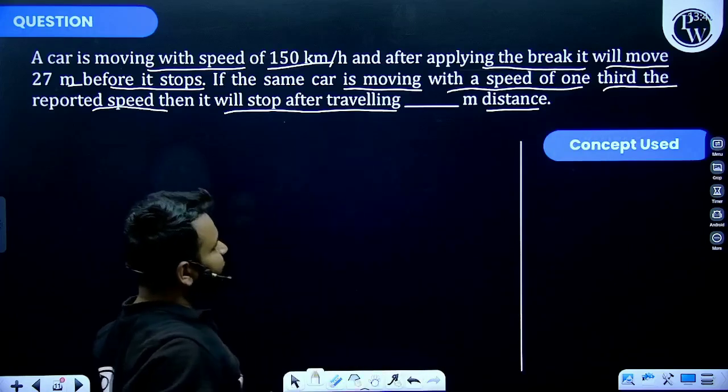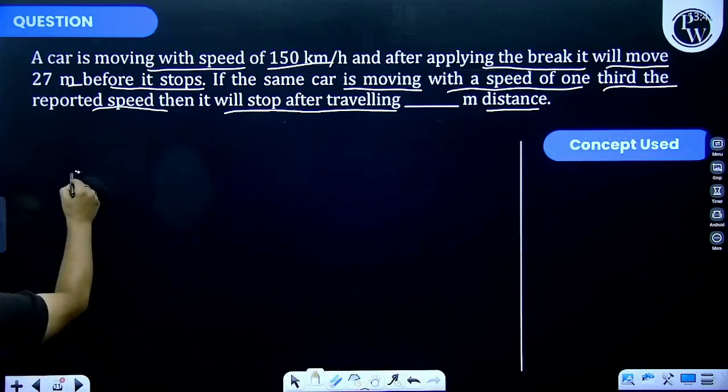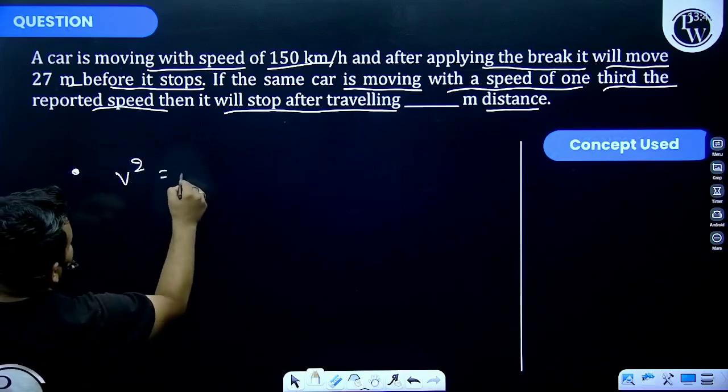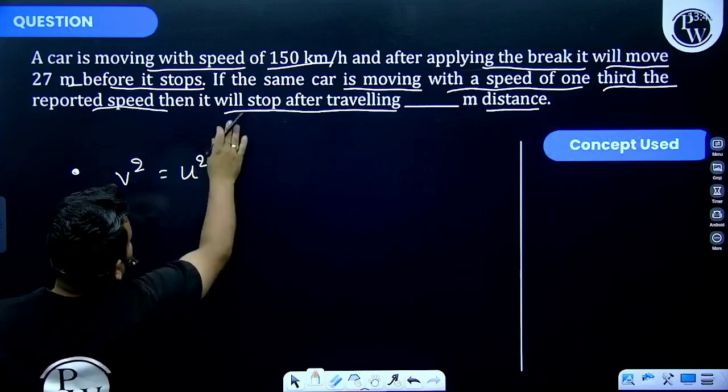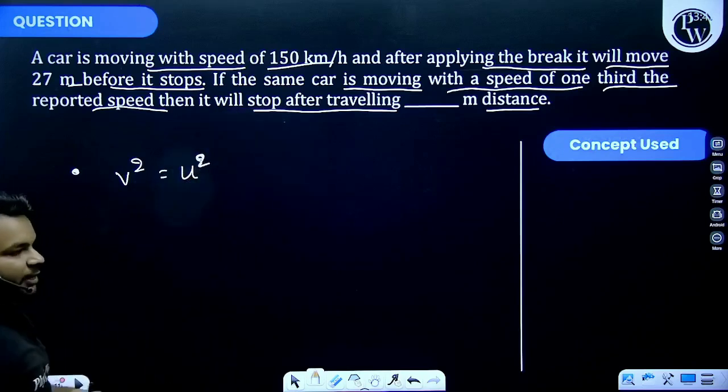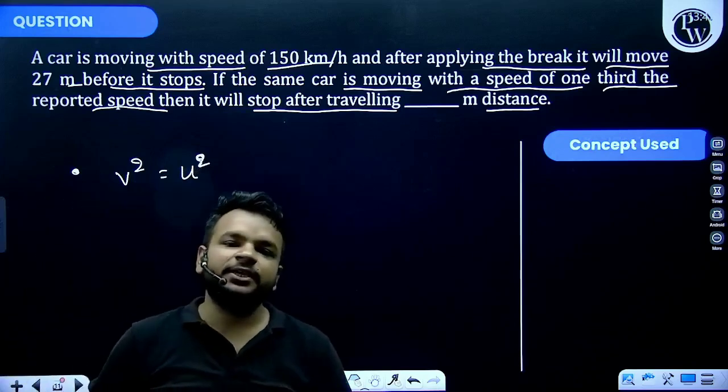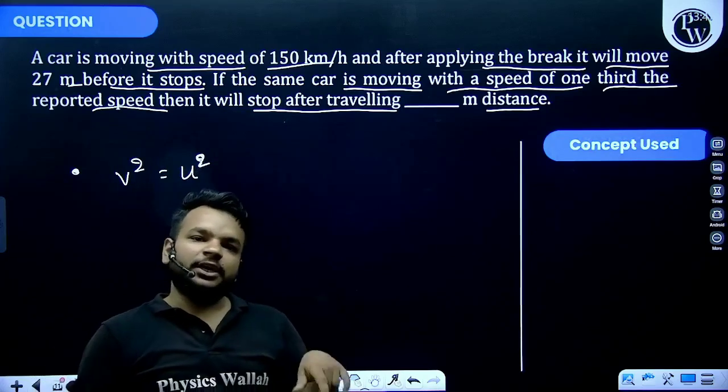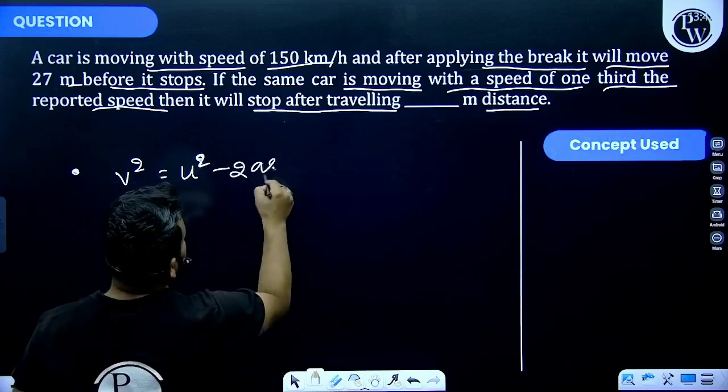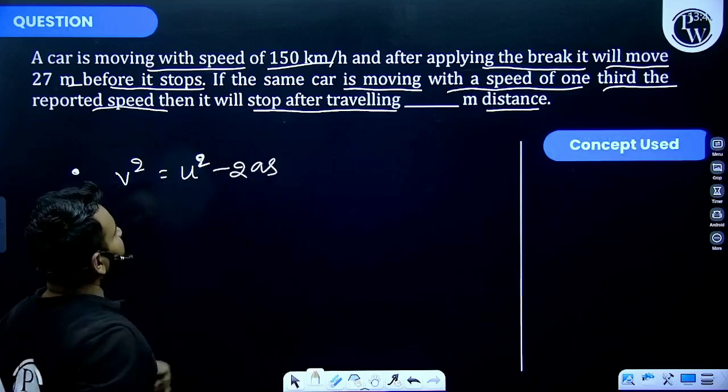But we know for a stopping we apply brake, and when we apply brake there is a retardation for the car. So we can write v² is equal to u² minus 2as. This minus sign represents that acceleration is negative, that means retardation.